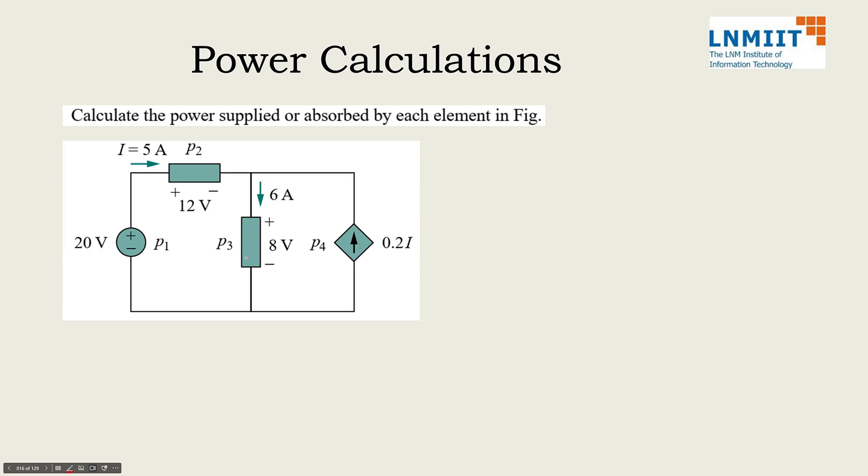Now let us take one example. So here if I ask you what is the value of P2. P2, if you see, there is a voltage which is appearing which is 12 volt, plus here, minus here, and the current is entering from plus side. That means the product will be plus 60.